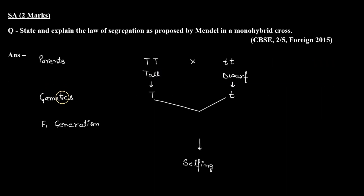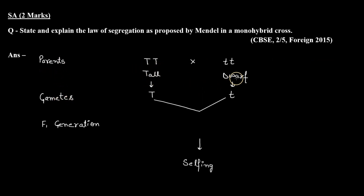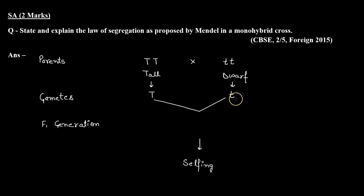Here we have an example of the height character of a pea plant. The parents are tall and dwarf — tall with capital T capital T, and dwarf with small t small t. Tall parents will produce all capital T gametes and dwarf parents will produce all small t gametes.